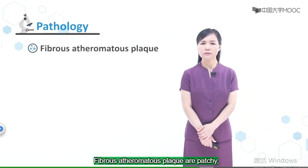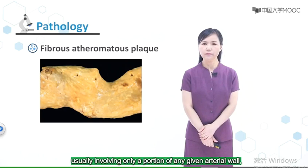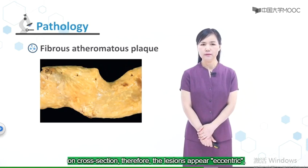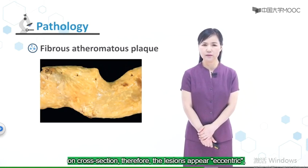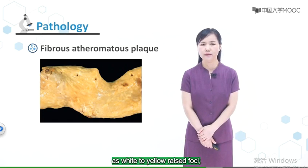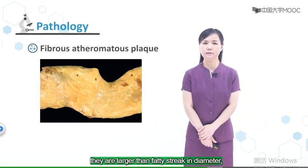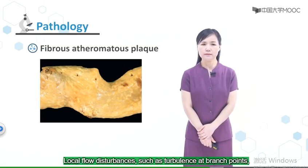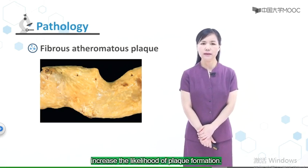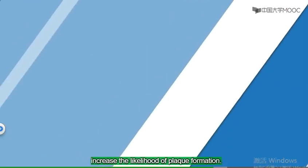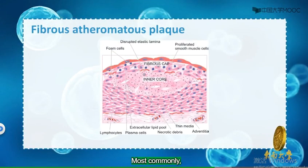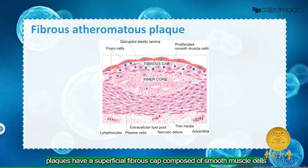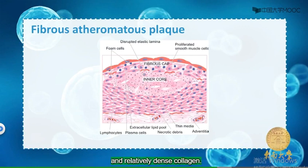Fibroatheromatous plaques are patchy, usually involving only a portion of any given arterial wall on cross-section. Therefore, the lesions appear eccentric, as white to yellow raised foci. They are larger than fatty streaks in diameter and can also coalesce to form large masses. Local flow disturbance, such as turbulence at branch points, increases the likelihood of plaque formation. Most commonly, plaques have a superficial fibrous cap composed of smooth muscle cells and relatively dense collagen.